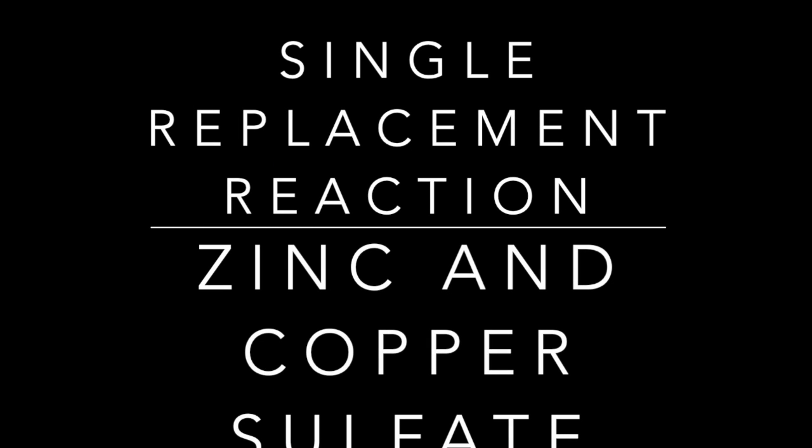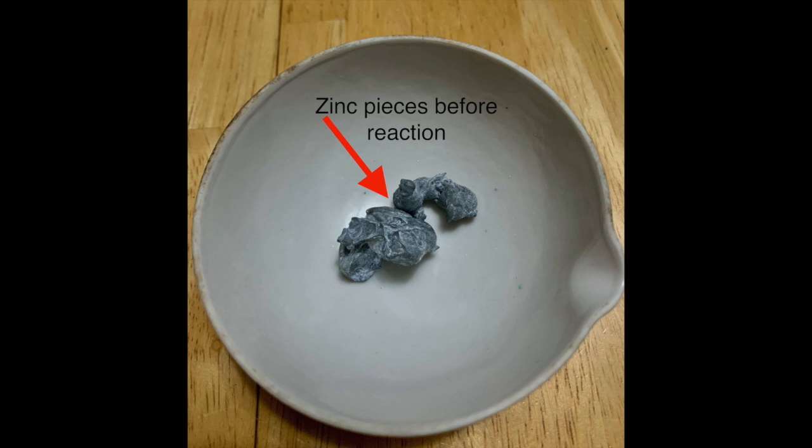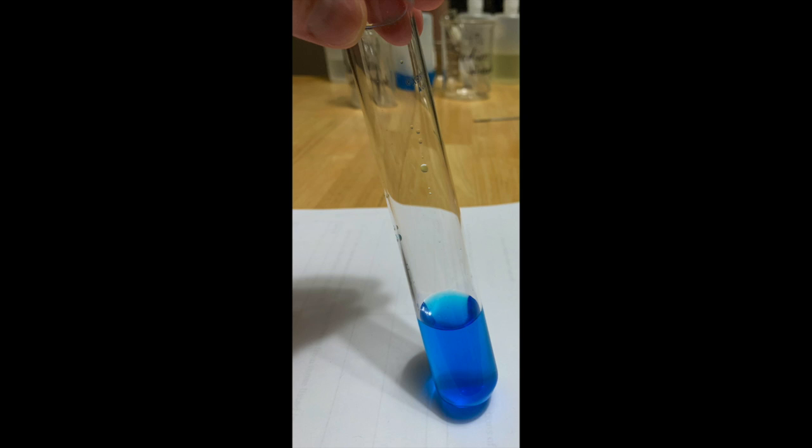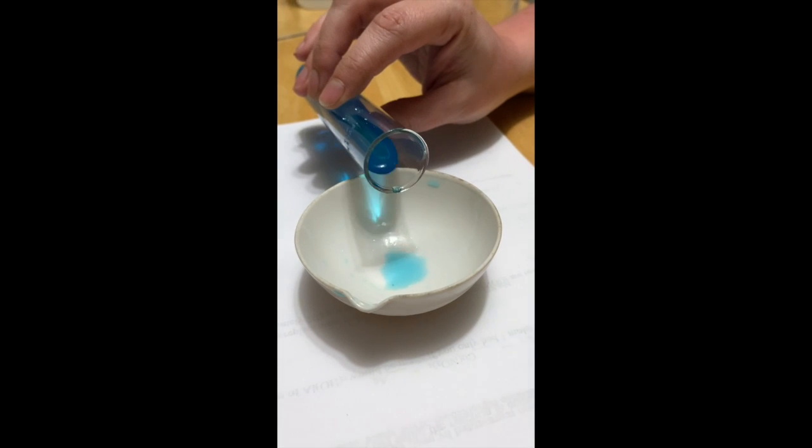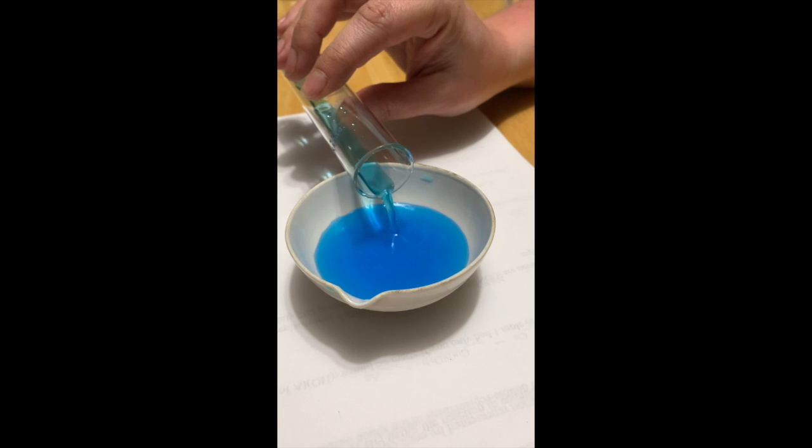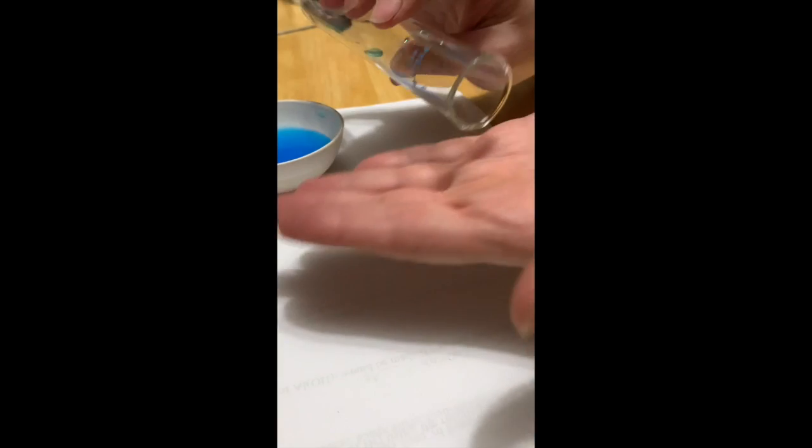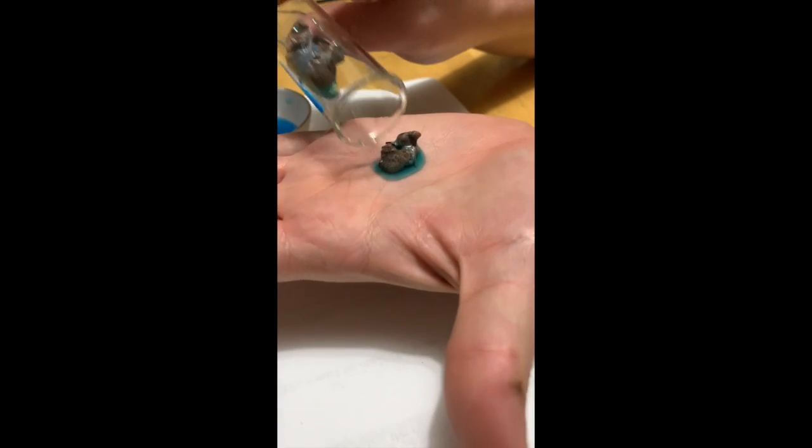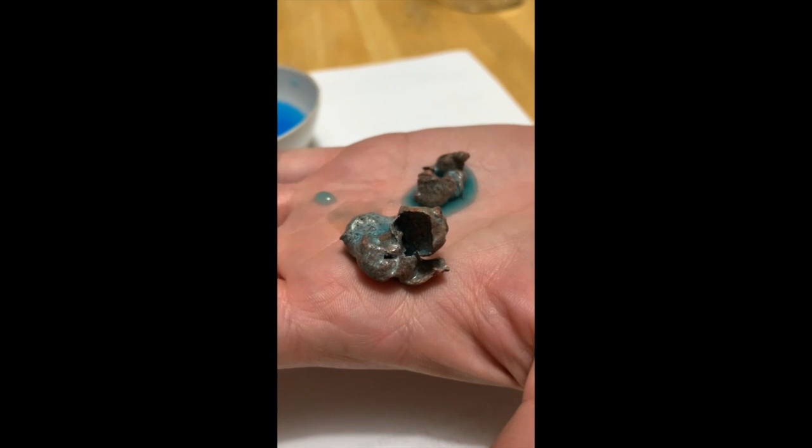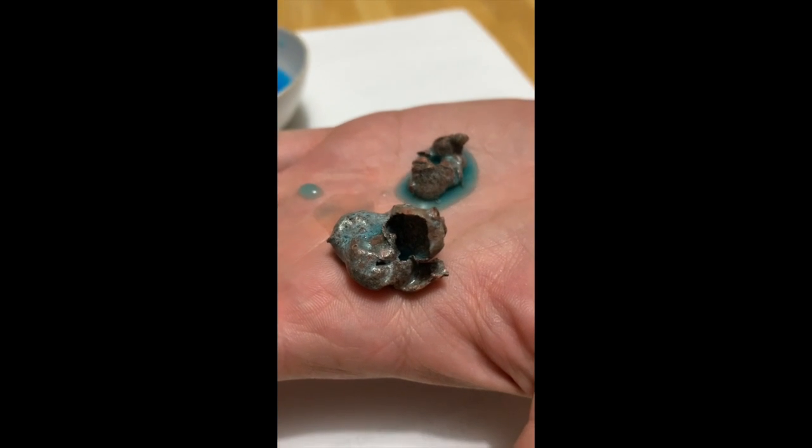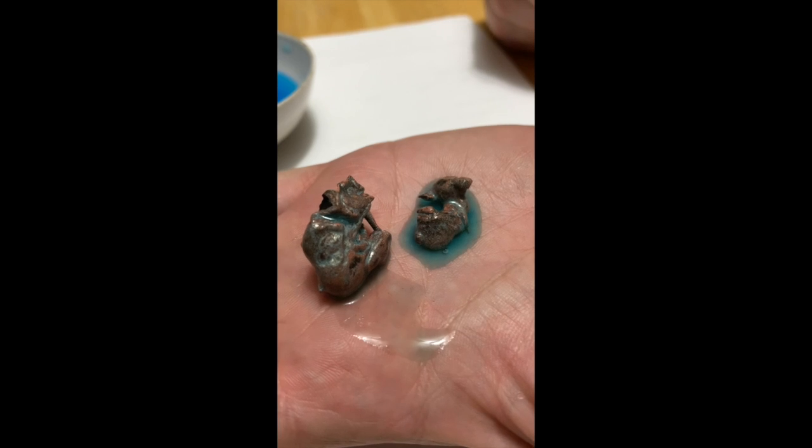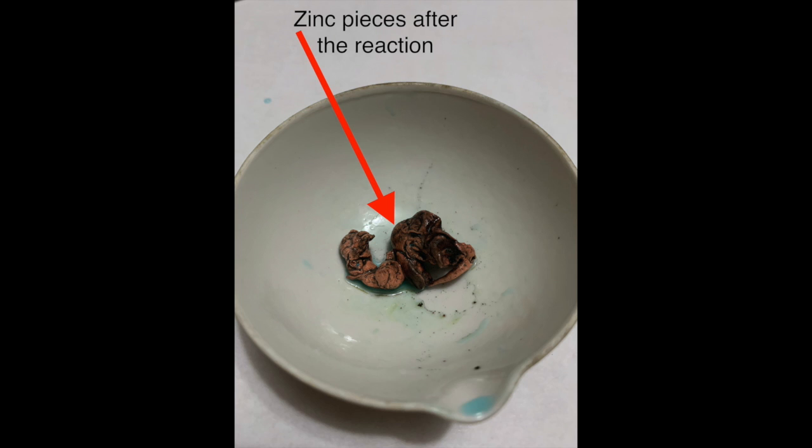Our single replacement reaction is with zinc and copper sulfate. So first we're going to take a look at the zinc. So there's what the zinc looks like before the reaction. And then the copper sulfate is the solution. So there's the copper sulfate solution. I put the zinc down in that. And then after several minutes, what you're seeing me do here is pour off that copper sulfate solution. And then I'm going to pour out the zinc pieces. So there are the zinc pieces. And then actually in the next picture, you're going to see what those zinc pieces look like after they dried off a little bit and in one of those dishes.